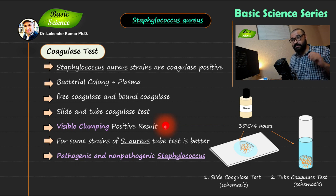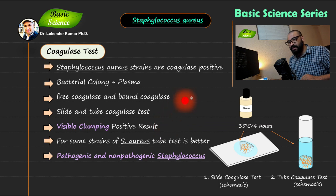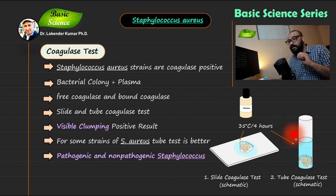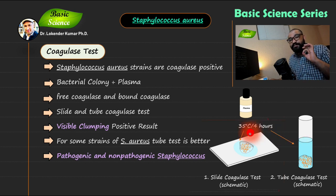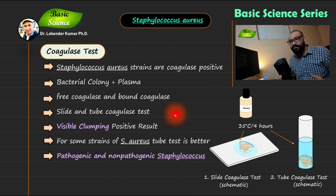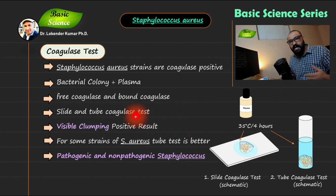You can perform the coagulase test by two different methods: the slide test and the tube test. The slide coagulase test detects bound coagulase, and the tube coagulase test most of the time detects free coagulase. Again, you need to have a freshly grown culture or a freshly grown colony of the bacteria.